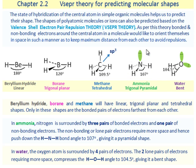In ammonia, the nitrogen atom is surrounded by three pairs of bonded electrons and one pair of non-bonding electrons. The non-bonding or lone pair electrons require more space and hence push down the H-N-H bond angle to 107 degrees, giving it a pyramidal shape.